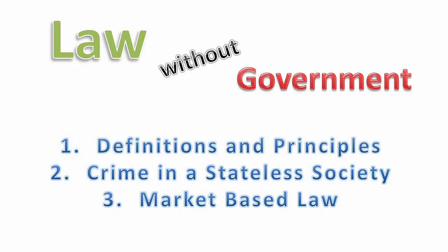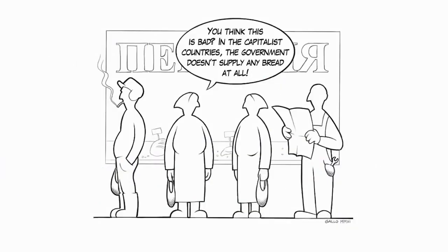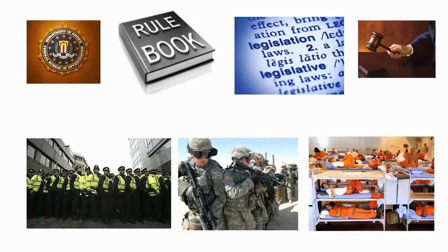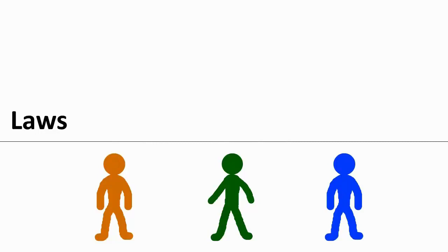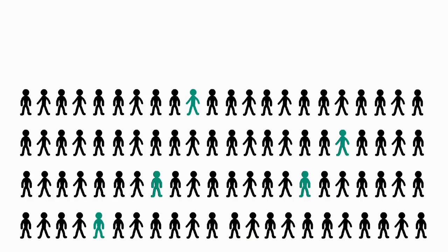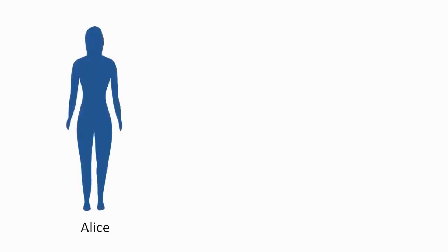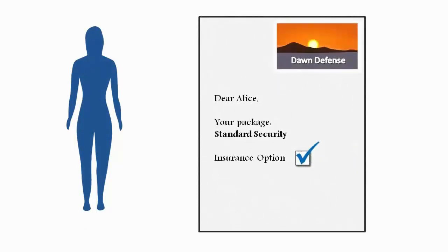Now we move into part two of the video. We've discussed definitions and principles. Now we're going to leave the desert island and consider the real, modern, complex world. Whenever an industry has been under the control of a monopoly for a long time, it becomes hard to imagine how it could be done differently by freely competing firms. We currently live in a world of governments — monopolists of law, out-of-control arbitrators making laws in conflicts involving themselves. The principles of equality under the law and competition between providers may sound good in theory, but what would that be like in practice? To explain it, I'm going to take the perspective of an ordinary person living in a hypothetical world with laws but without government. Meet Alice.